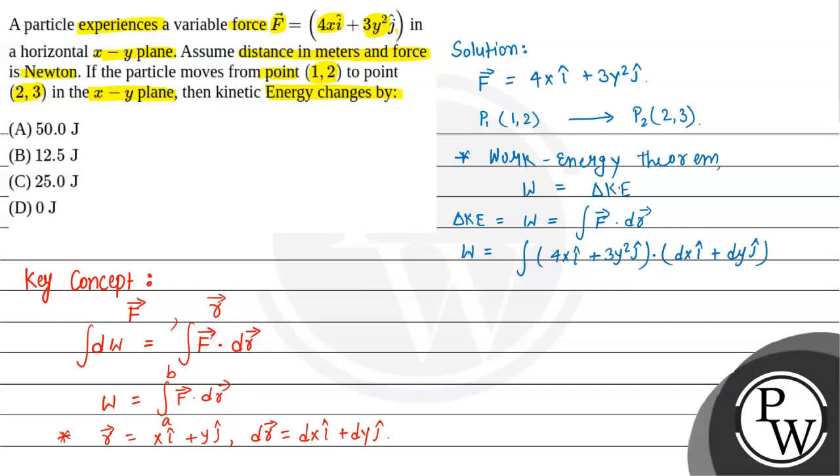Now from point P1 to P2, we can write work done W. Taking dot product, i dot i is 1 and j dot j is also 1, others will be 0. So this will become